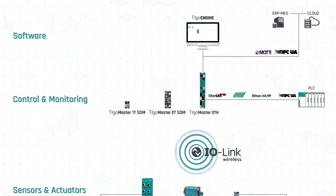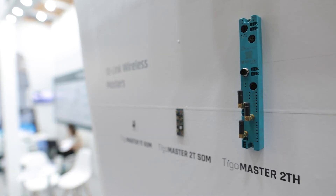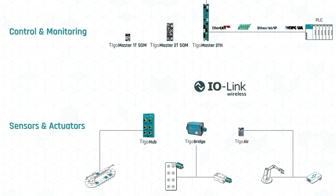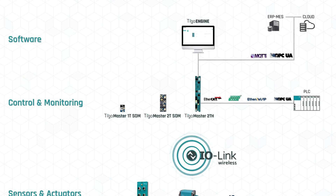At the center of Cortigo's IO-Link wireless solution is the TIGO Master, which on one end wirelessly connects to the IO-Link wireless devices and on the other to PLCs over industrial Ethernet protocols such as EtherCAT, PROFINET, Ethernet IP, or OPC UA.